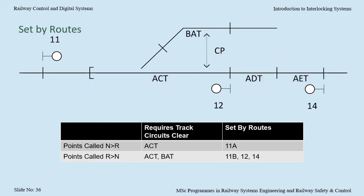The next column is the 'set by routes' column. If the signaller sets 11A route from 11 signal up to the top right, we want the interlocking to call the points reverse. If the signaller sets 11B route or 12 route, we want the interlocking to call the points normal. To go from 14 signal to 12 signal at line speed, we want a safety margin — the overlap — in case the train SPADs. So if the signaller sets 14 route, we want the interlocking to call the points normal to create a valid overlap.